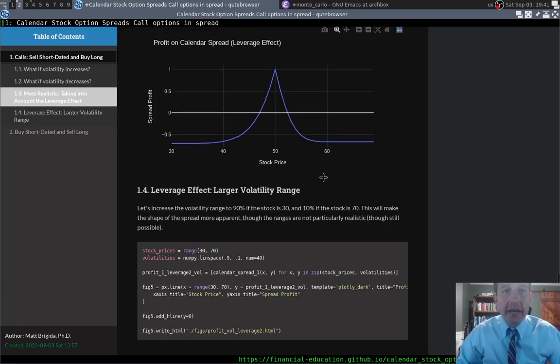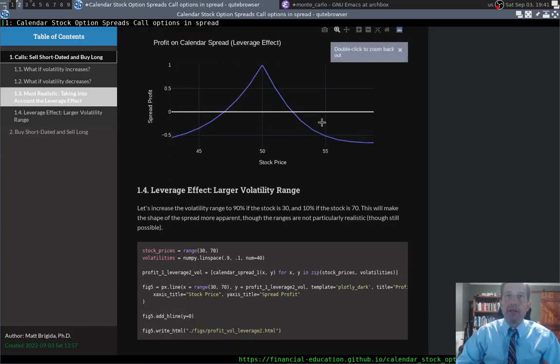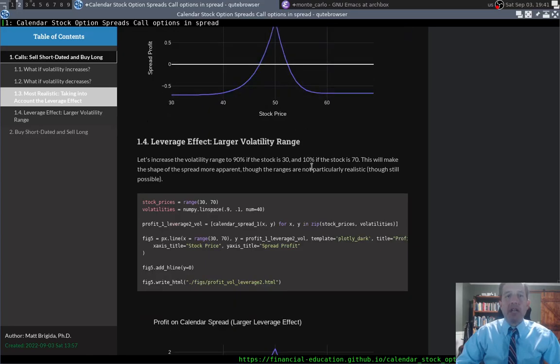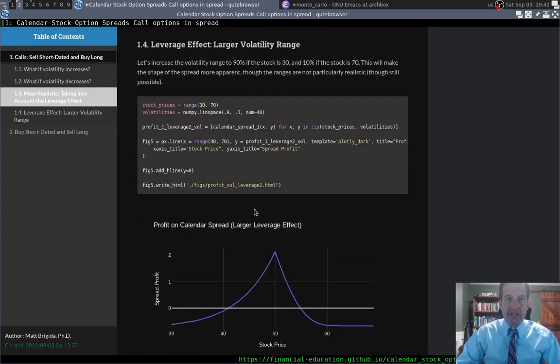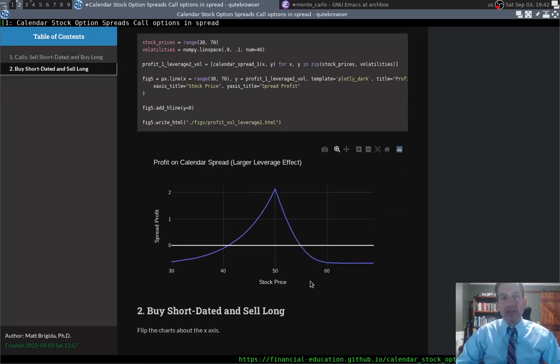So now what I did below here, this is kind of subtle, you can kind of see it. But what I did was I changed to say, okay, well, let's say if it goes down to 30, the volatility increases to 90, and it still goes down to 10% at 70. Now you really see that asymmetry. So if the volatility is really sensitive to the underlying stock price, you start to see this asymmetry where we start to break even at 41.